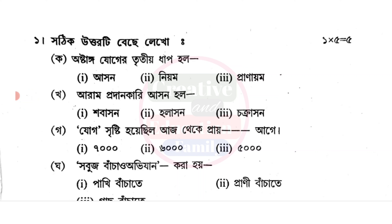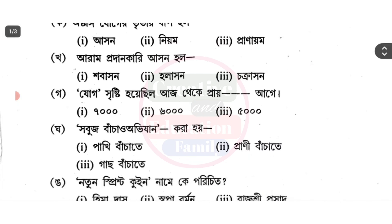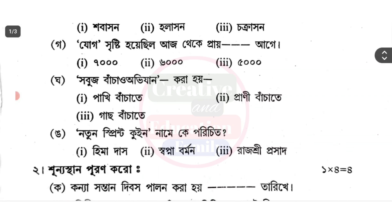ટોટાલ તુમাદેર પોય બેચે લેખો પ્રદરી ભોષ્ટેમાન એ સ્તેગે પ્રાઈ ડ્તેશ બૂછેતે સાથાજ ચોહાજ પ્તેટા હ્તેતે સોબુચે વાછે. જાન કરો, નામ છે હીમાદાશ શપ્ના બરમન, રાજોસ્ટી પોશાદ.